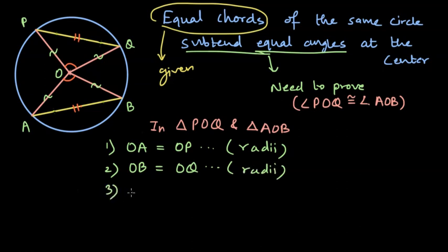Is there any third element that we can show is congruent in these two triangles? Yes, we definitely can. And that is going to be the given sides AB and PQ. And since these are equal chords, AB is equal to PQ. And this is given to us. And now we have three corresponding elements from both the triangles to be congruent.